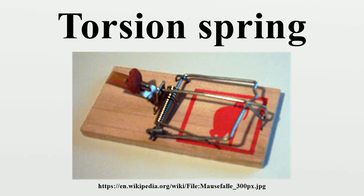Some familiar examples of uses are the strong helical torsion springs that operate clothespins and traditional spring-loaded bar-type mousetraps. Other uses are in the large coil torsion springs used to counterbalance the weight of garage doors, and a similar system is used to assist in opening the trunk cover on some sedans.